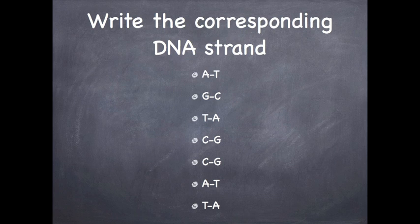As you can see on this slide: A matches with T, G goes with C, T goes with A, C goes with G, C goes with G again, A goes with T, and T goes with A. Remember, adenine and thymine always match up — you can make the word AT. Guanine and cytosine have that rounded shape, which is how I remember they always go together.